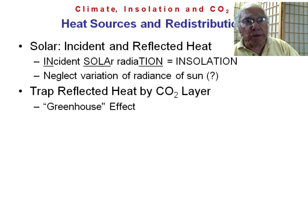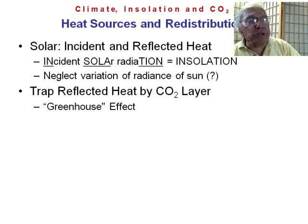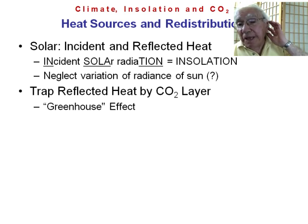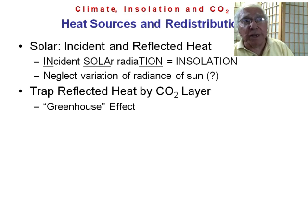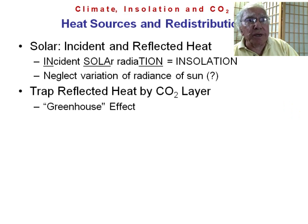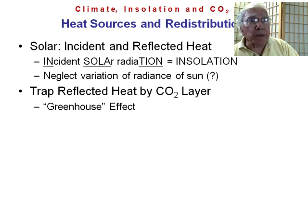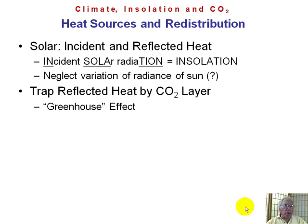Most of the heat is absorbed by the Earth, especially if there's no ice. When it's reflected, the heat that goes up is trapped by the CO2 layer and reflected back down again. That's called the greenhouse effect, and it changes the heating on the Earth, the temperature, and the climate. The CO2 layer forms and reflects the heat back to the Earth.